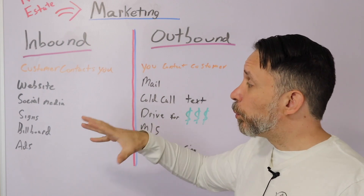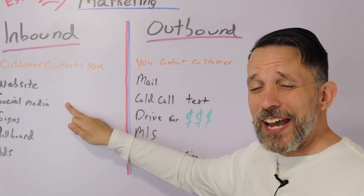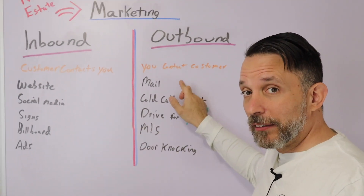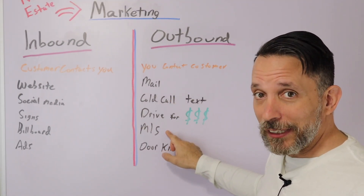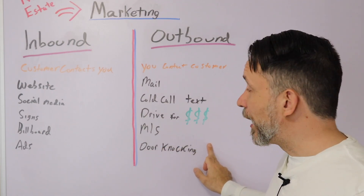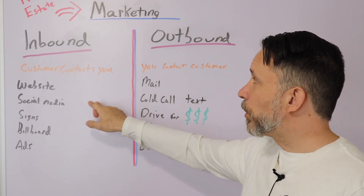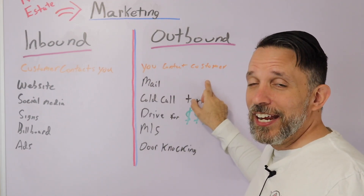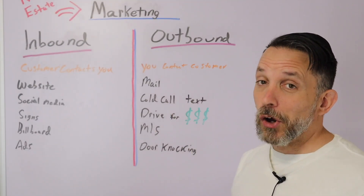On the inbound side, there are some startup costs — with the exception of organic social media, which is generally free but effort-driven. On the outbound side, direct mail does have a cost, but making offers on the MLS and door knocking won't cost you anything. Generally speaking, inbound has more startup cost, while outbound is lower cost but comes with lower conversion rates.